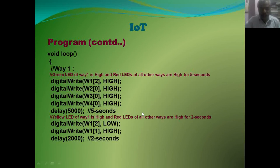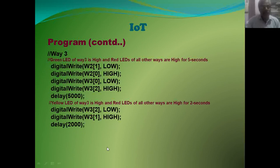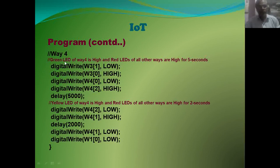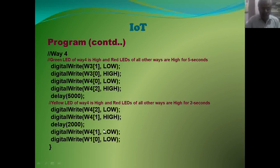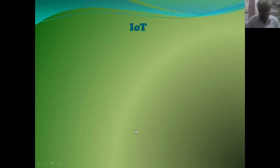The same concept is used for Way2, Way3, and Way4. In each, first the green LED is on and all red LEDs of the remaining ways are HIGH for 5 seconds. After 5 seconds, the yellow LED of that root is HIGH and all other red LEDs are HIGH for 2 seconds. After that, all LEDs are set LOW. This is the complete program for the 4-way traffic signal.